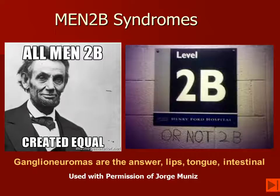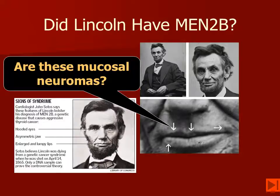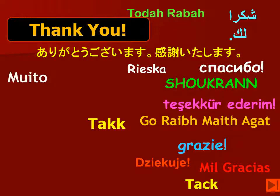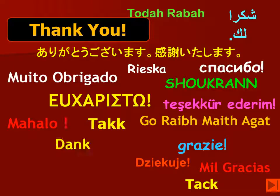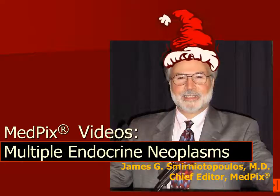Many authors have suggested that Abraham Lincoln actually had MEN2B. He had a somewhat marfanoid habitus, and he also had lesions on his lips that appear in old photographs to be mucosal neuromas. I'll leave that discussion to you and your consultant, Dr. Google. I'm Jim Smyrnatopoulos and I want to thank you for your attention. I hope everyone has a very joyous holiday season.